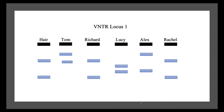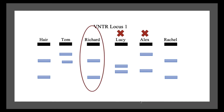From the results found, we can compare the DNA analysis of each suspect. At Locus 1, Lucy's and Alex's bands do not match with the bands of the DNA found at the crime scene. Thus, both cannot be the robbers and are eliminated as suspects. On the other hand, Richard's bands do match with the bands on the hair, and one band matches with Tom's band. That can be because Richard is Tom's biological father. Nonetheless, since his bands match with the hair found, Richard is still a suspect.